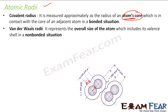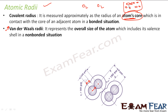Then we have something called van der Waals radius. This represents the whole size of the atom and includes the valence shell also. We will understand this more when we talk about van der Waals force, which is the force of attraction between two molecules. So if I have one oxygen molecule and one more oxygen molecule, they are held by van der Waals force, which we will discuss in the next chapter.